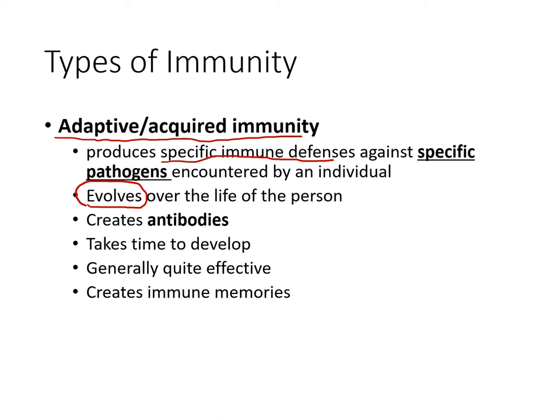Adaptive immunity will evolve over the life of a person, depending on the kinds of viruses, bacteria, and pathogens you've contracted. For example, if you've had chicken pox before, you would have the adaptive tools to fight off future chicken pox infections. The diseases you've had in your lifetime dictate how your adaptive immune system evolves — each person's adaptive immunity will be slightly different.